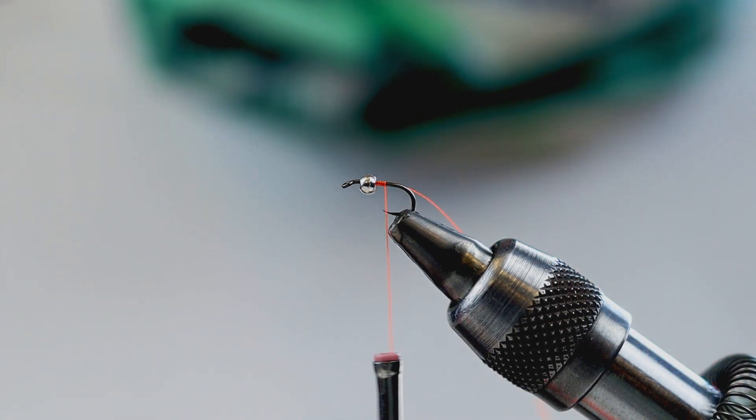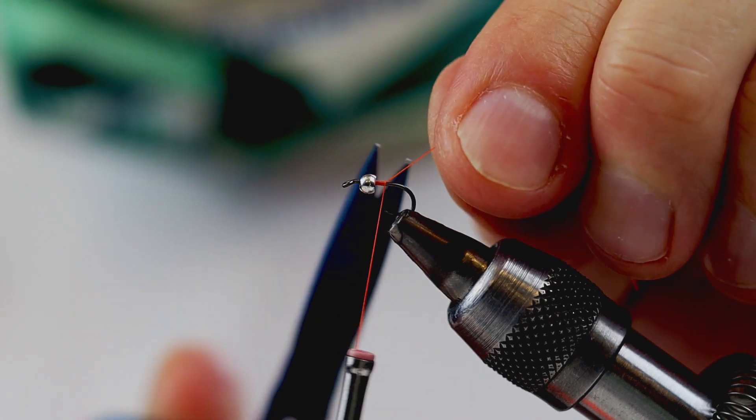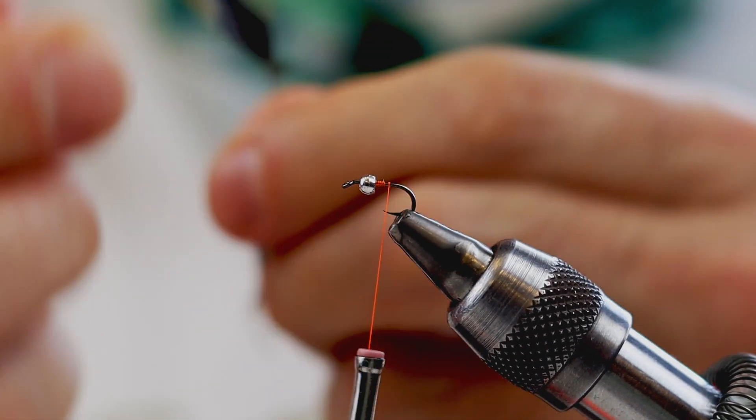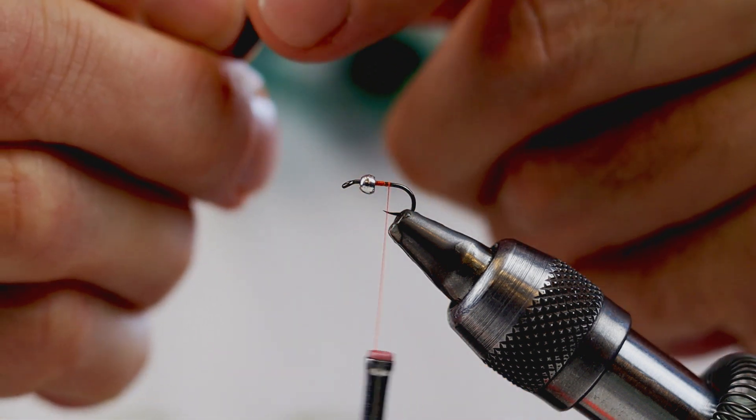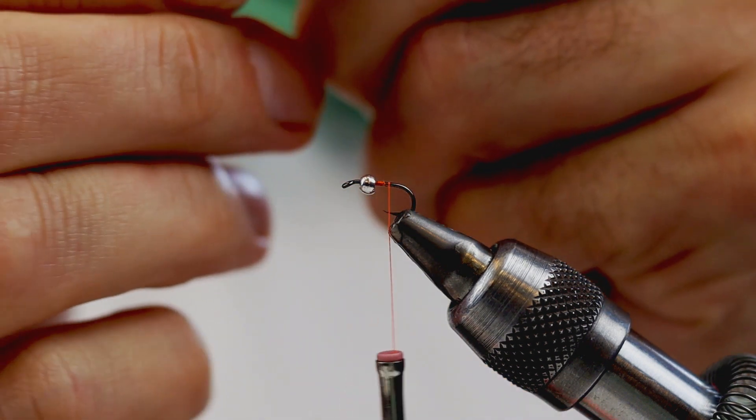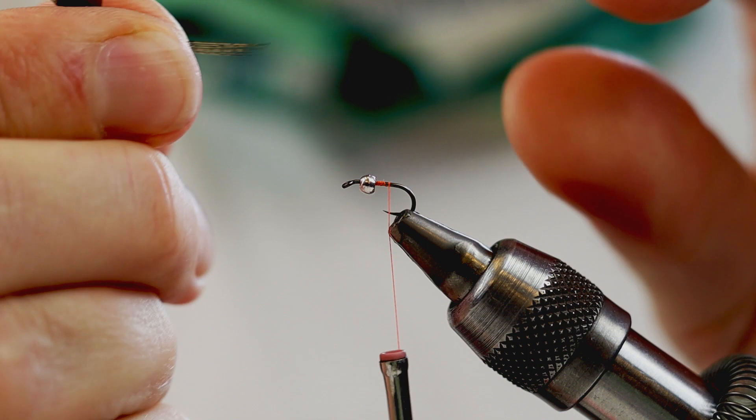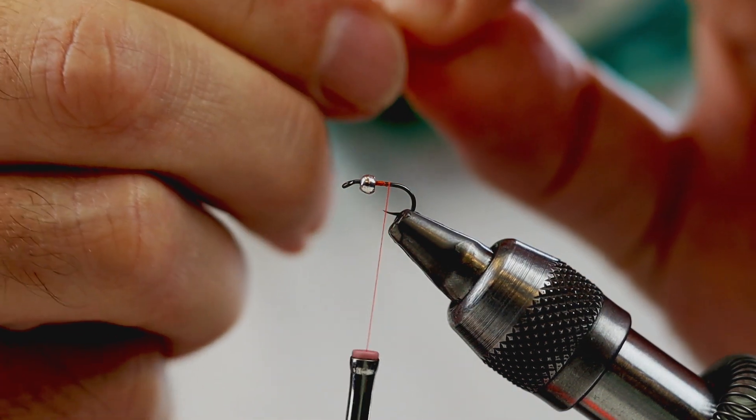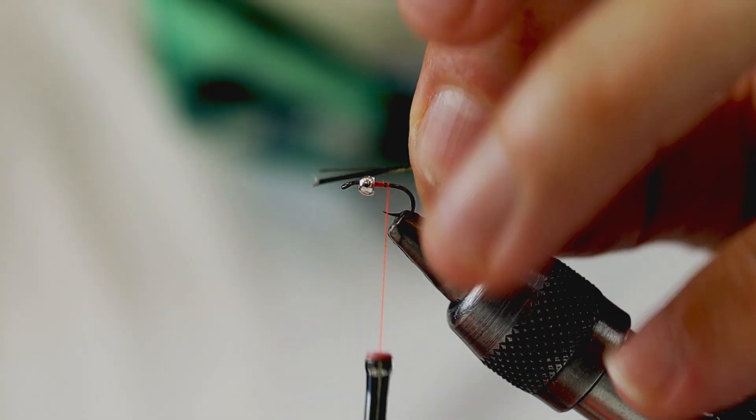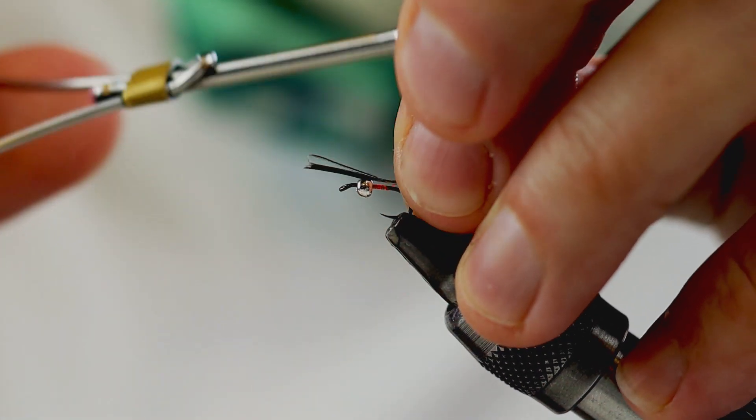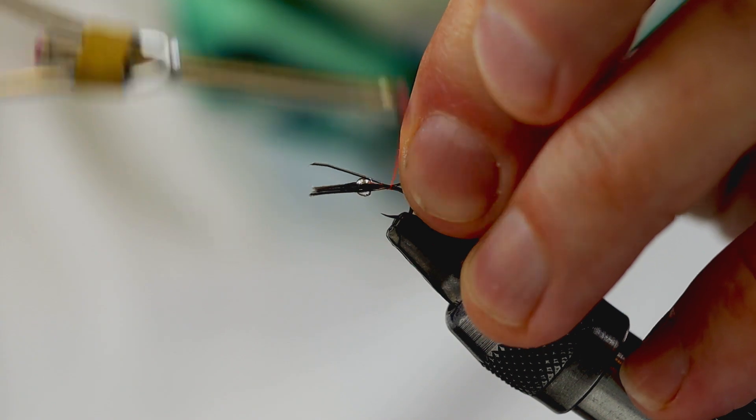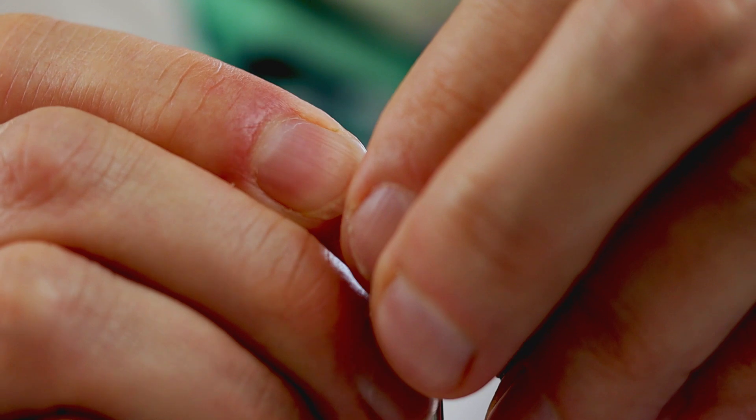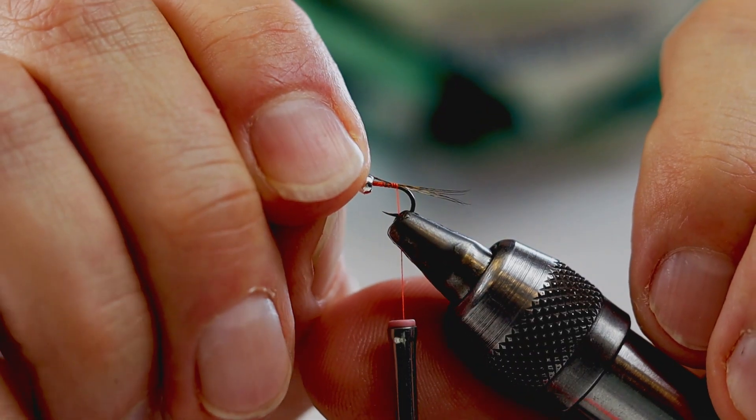At the same time that you put the Cock de Leon tail, you're going to build the hot spot. I'm going to get some fibers of Cock de Leon and bind them out. That's right.